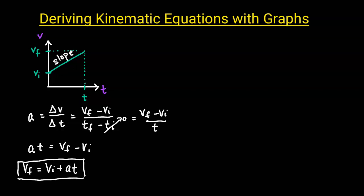For our second kinematic equation, we're going to look at the area under the curve. The area under a velocity versus time graph represents the displacement, and the area looks like a rectangle and a triangle.